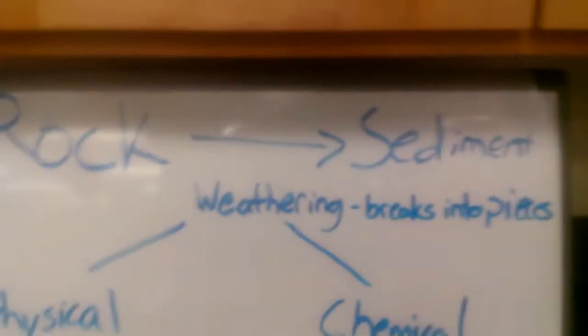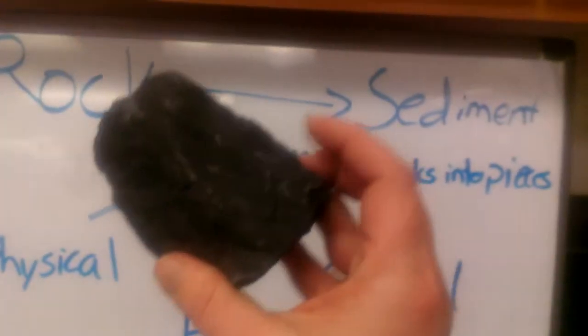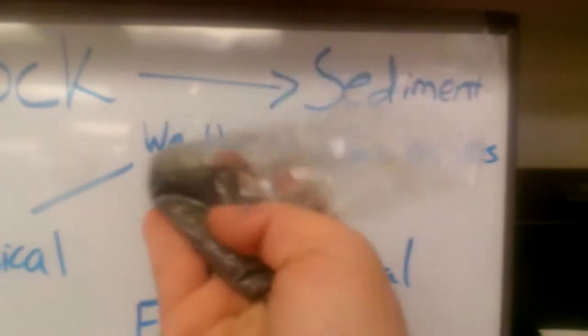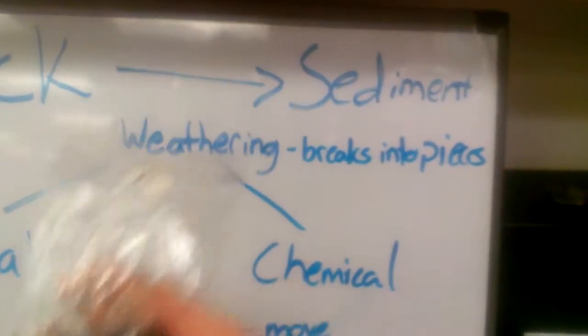Alright, so today we're going to talk about how a rock can become a sediment. So take a rock like this one, how do we get it to be a powder like this, which is what we would call sediment? It's broken up pieces of rock.